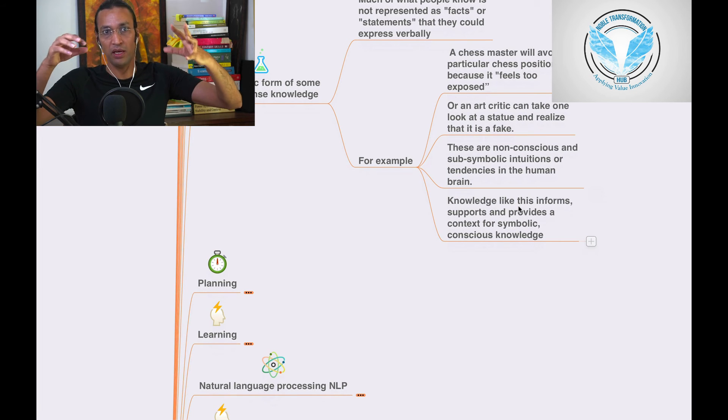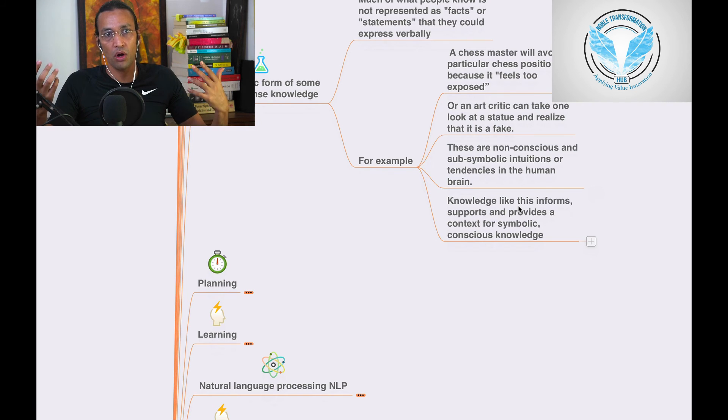An art critic can look at a particular statue and say it is a fake. And these are non-conscious, sub-symbolic intuitions or tendencies in the human brain. We perceive, we say it is a fake, it is not good and it might be. Sometimes we are wrong.